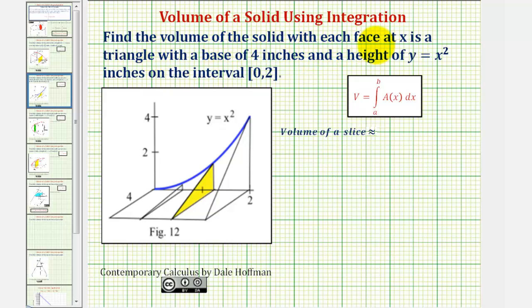We want to find the volume of the solid with each face at x is a triangle with a base of four inches, as we see here, and a height of y equals x squared, graphed here in blue, over the closed interval from zero to two along the x-axis.